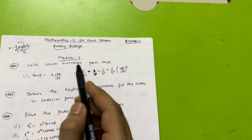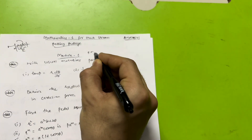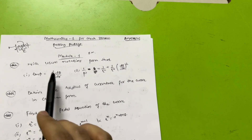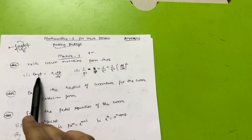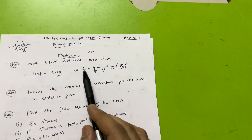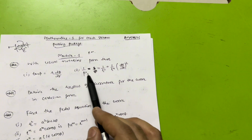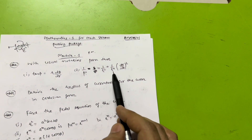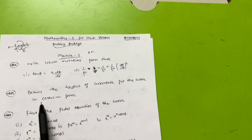First we have Module 1, which is a passing module, in which you have to cover these super important questions. With usual notations, prove that tan φ = r dθ/dr — most important one. Next, prove that 1/p² = 1/r² + (1/r⁴)(dr/dθ)².